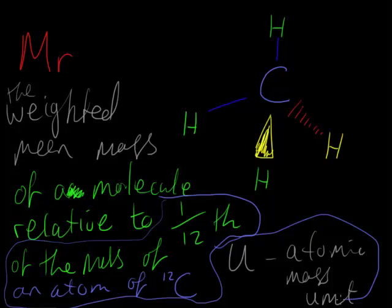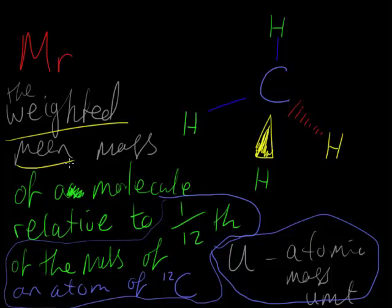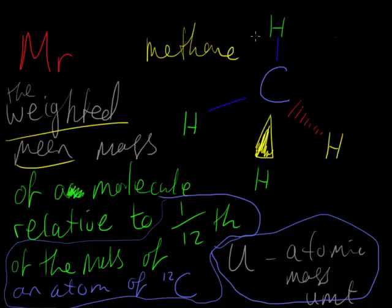Now, why have I drawn this molecule here, and why are these hydrogens different colors? They're all hydrogens but they're different colors — three green and one yellow. This molecule here is methane, a simple hydrocarbon, a simple alkane.